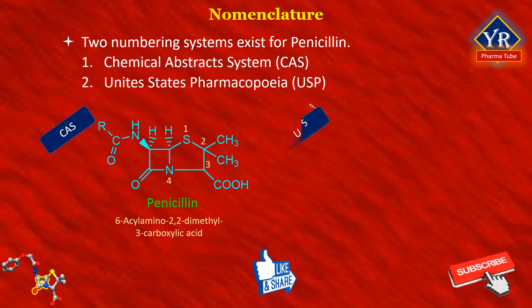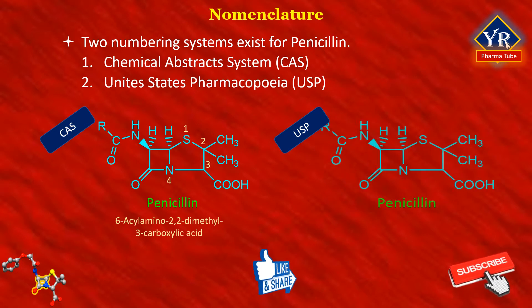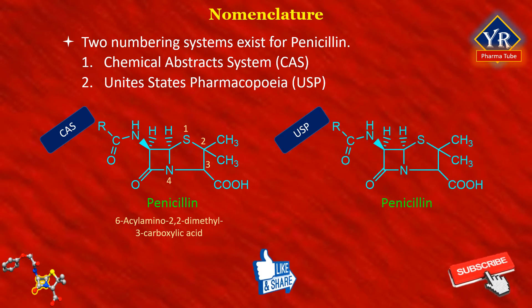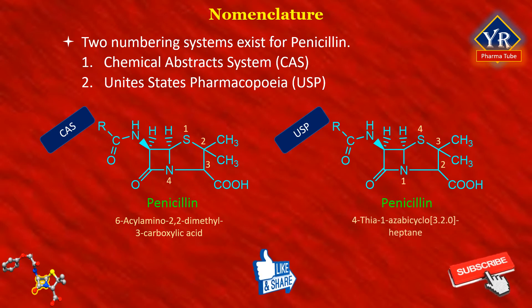The second method is the United States Pharmacopeia, abbreviated USP, in which the numbering system is the reverse of the CAS procedure. In this method, number one is assigned to the nitrogen atom and number four to the sulfur atom. Thus, penicillins are known as 4-thia-1-azabicyclo[3.2.0]heptanes.